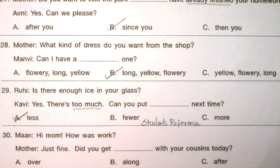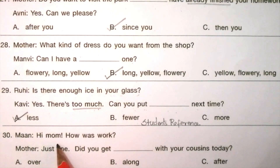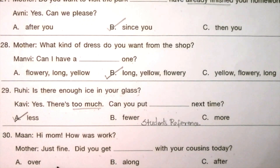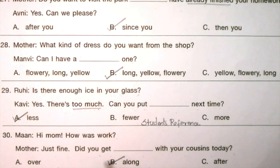Question 30 — Child: Hi mom, how was work? Mother: Just fine. Did you get ___ with your cousins today? Options: over, along, after. The answer is B: along. Did you get along with your cousins today?